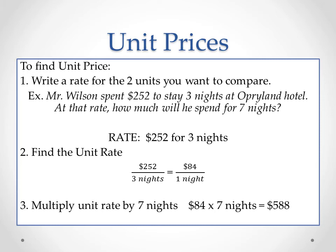We can also find unit price the same way. First, write a rate for the two units you want to compare. Mr. Wilson is going to spend $252 to stay three nights at the Opry Lane Hotel. At that rate, how much will he spend for seven nights? We need to find the unit rate: $252 for three nights equals $84 for one night — so the unit rate is $84 per night. Then we multiply $84 by seven nights, and to stay for a week it would cost him $588.